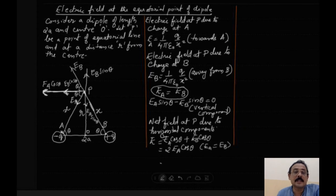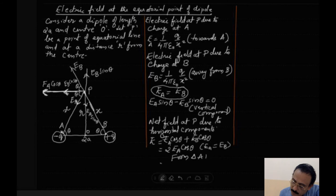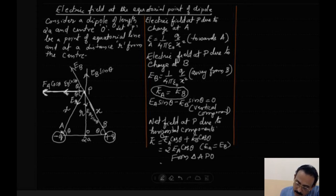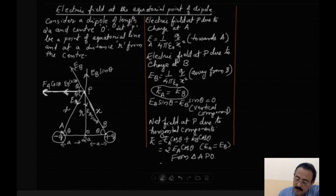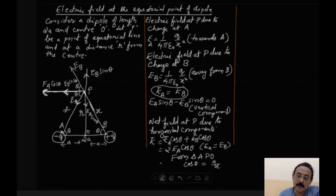Considering triangle APO, we can find cos θ. The whole dipole length is 2a, so from A to O is a and O to B is a. Therefore, cos θ = a / x.